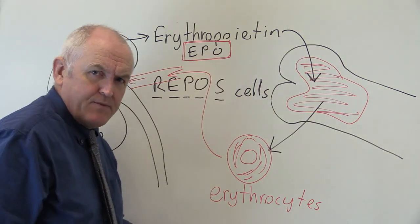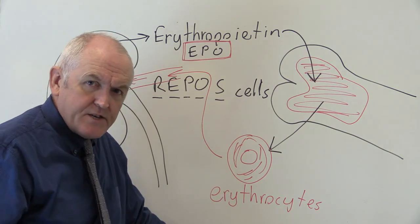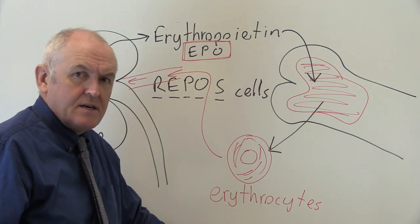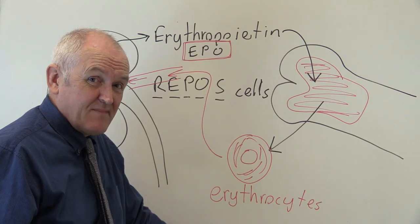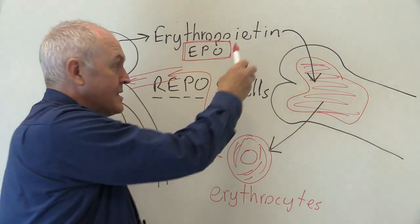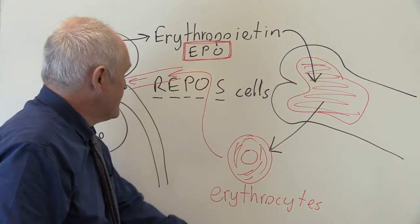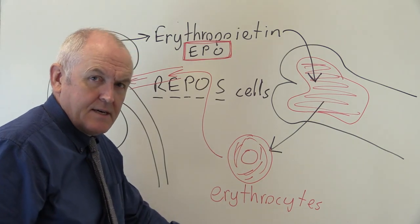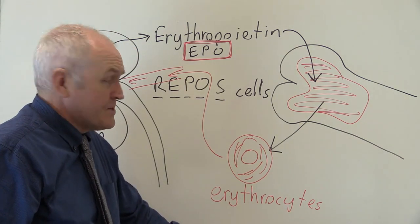Unfortunately, some people have abused EPO and have taken it to increase their red cell mass, to increase their aerobic athletic capacity, which of course is cheating. But it has happened, and people have used this to cheat in athletic competition, which is unfortunate.